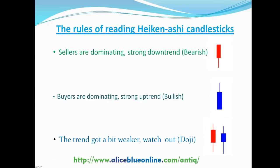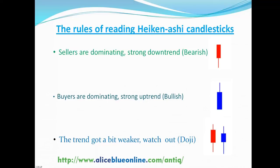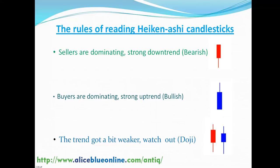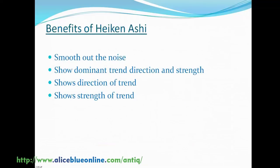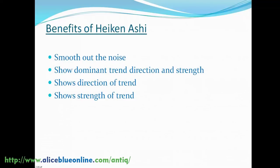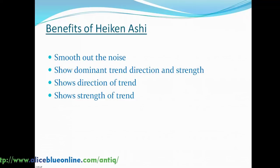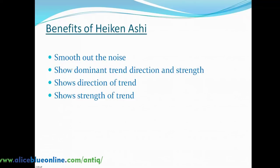The rules of reading Heikin Ashi candlesticks: if the sellers are dominating, it means a strong downward trend; if the buyers are dominating, it means a strong uptrend. If the trend gets a bit weaker, watch out. Benefits of Heikin Ashi: it smooths out the noise, shows dominant trend direction and strength.